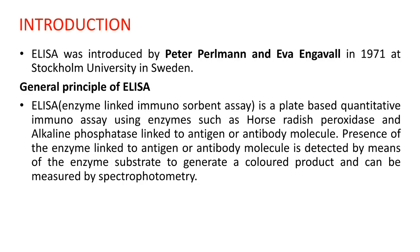ELISA uses enzymes such as horseradish peroxidase and alkaline phosphatase, which are linked to the antigen or antibody molecule. The presence of the enzyme-linked antigen or antibody complex is detected by means of an enzyme substrate to generate a color product, which can then be measured by spectrophotometry.